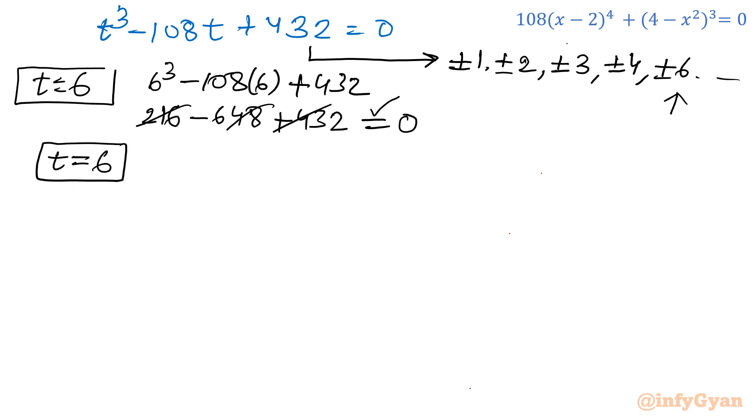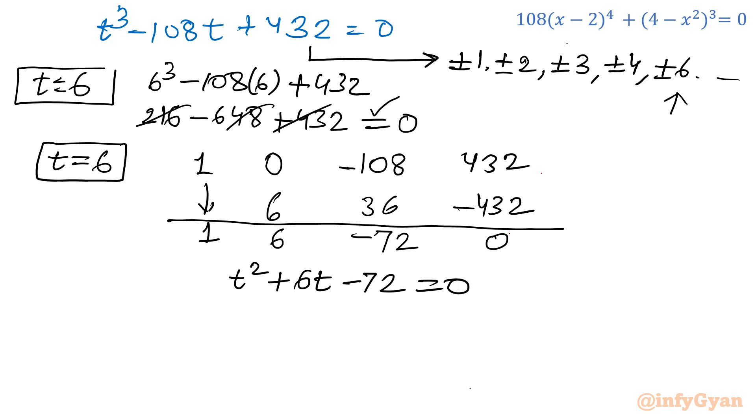Coefficient of t³ is 1, t² is not there so 0, t is minus 108, constant is 432. I will put one line over there, leading coefficient as it is. 6 times 1 is 6. If you add you get 6, then 36. Minus 72 times 6 will come out minus 432, giving 0. So it is converted into quadratic: t² + 6t - 72 = 0.